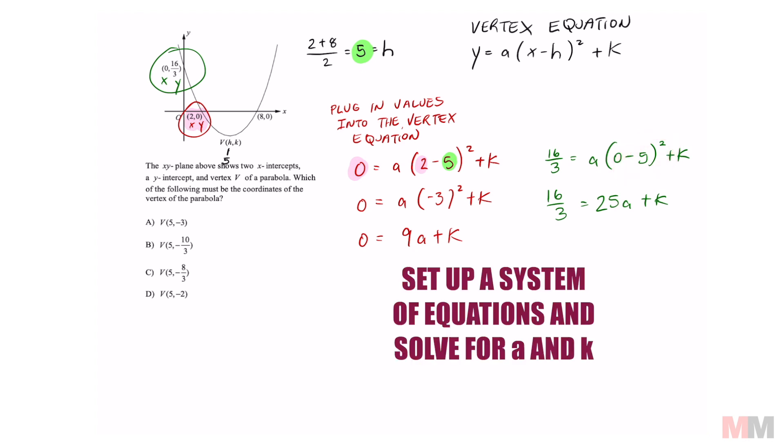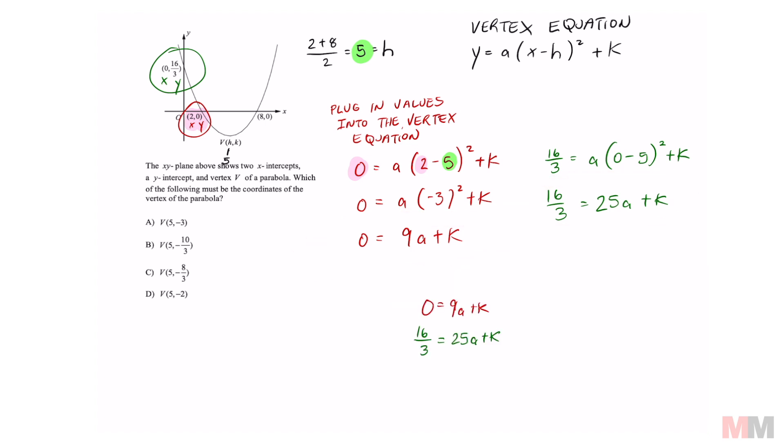And the very last step we can set up a system of equations to solve for a and k which isn't too bad because you can kind of see that the k's will cancel out by multiplying all of this by negative 1.